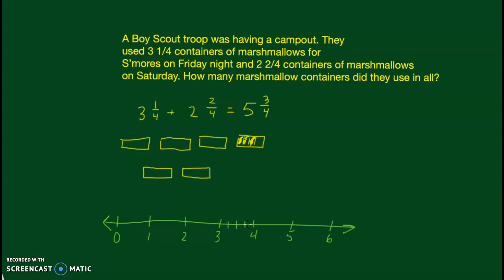The fourths are labeled: three and one-fourth, three and two-fourths, three and three-fourths, four, four and one-fourth, four and a half, four and three-fourths, five, five and one-fourth, five and two-fourths, five and three-fourths, and six. My starting point is three and one-fourth. I add two and two-fourths: first plus one whole — one equals four-fourths, count one, two, three, four — gets me to four and one-fourth. Plus another whole gets me to five and one-fourth. Then two more fourths — one, two — brings me to five and three-fourths.